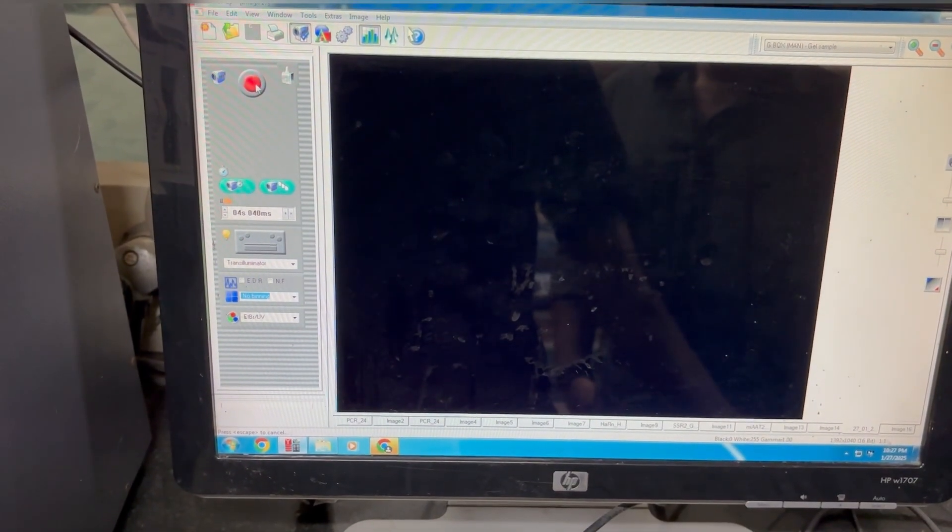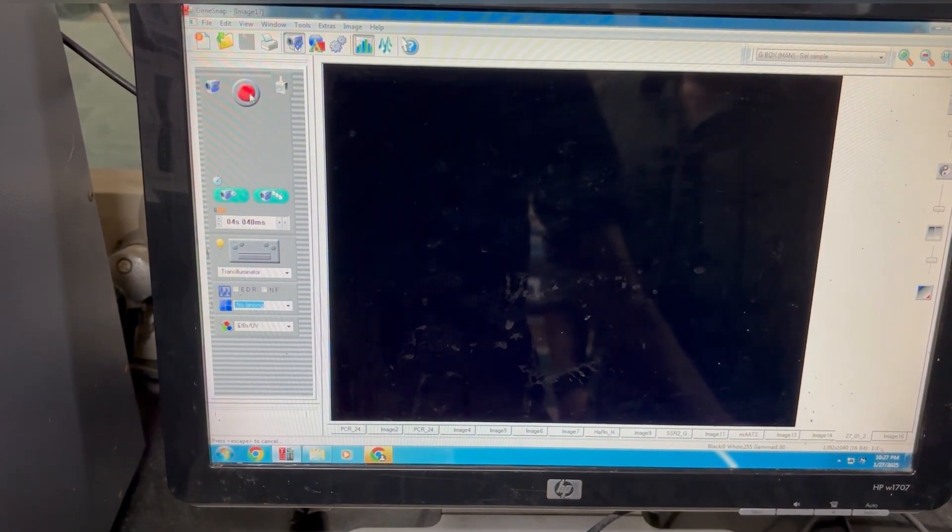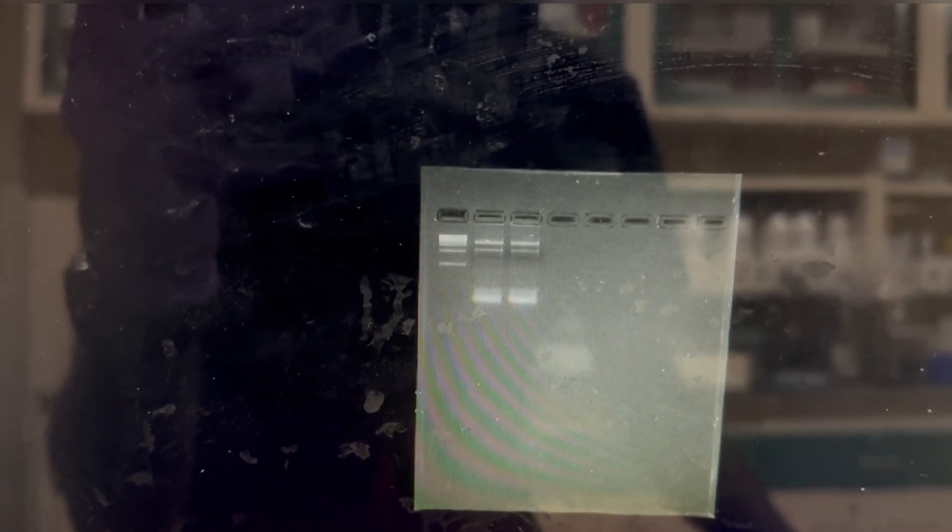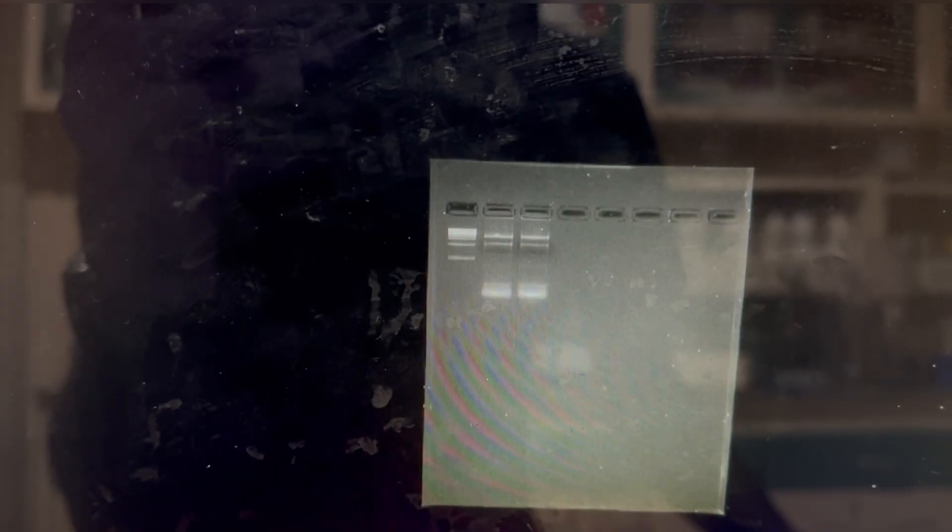Now it's time to check our RNA whether it has good quality of RNA or not. Here as you can see, there are three distinct bands suggesting good quality of RNA that includes 28S rRNA, 18S, and 5S rRNA respectively. And also I could not see any genomic DNA contamination.